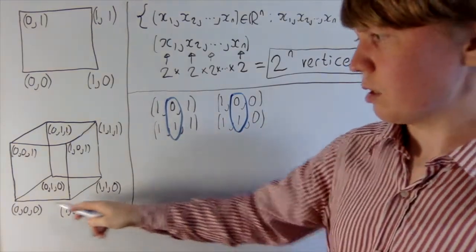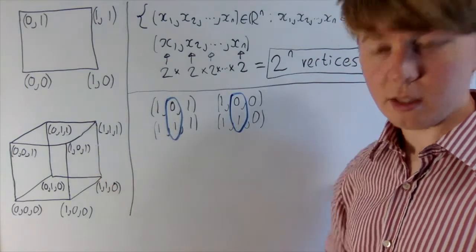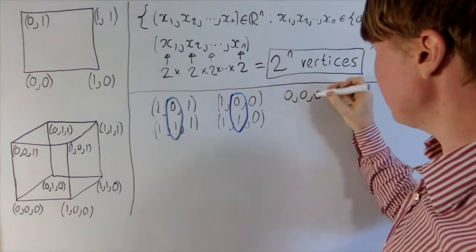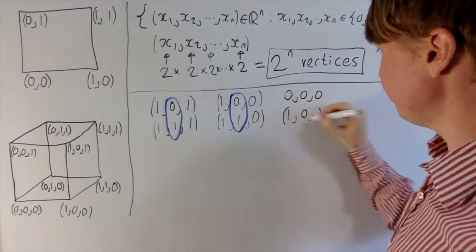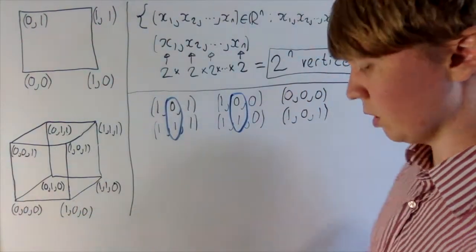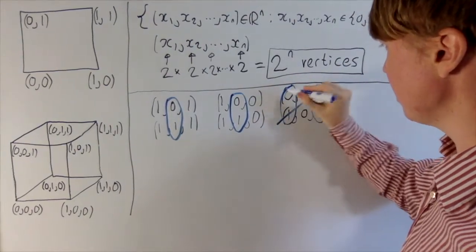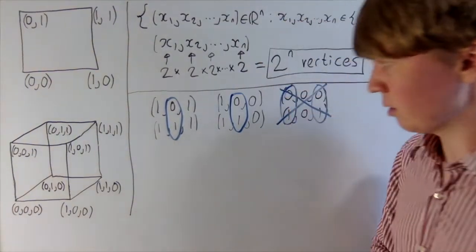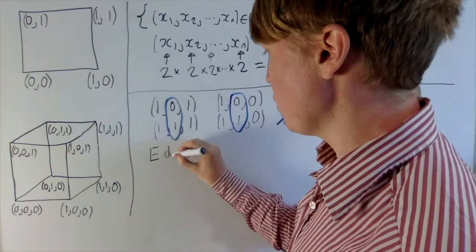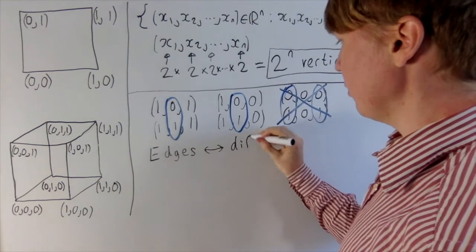If you look at two vertices that aren't connected, say the origin (0,0,0) and (1,0,1), there's no way to get from one to the other in a single step — you have to go along two edges. That's because we've got a difference of two coordinates. So what we're concluding is that edges correspond to a difference of only one coordinate: two vertices connected by an edge differ in exactly one coordinate.